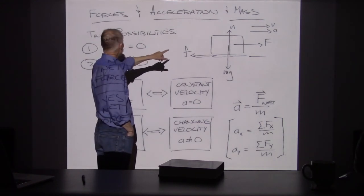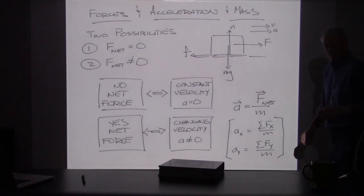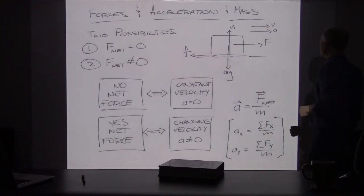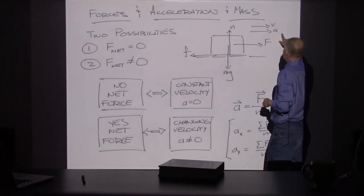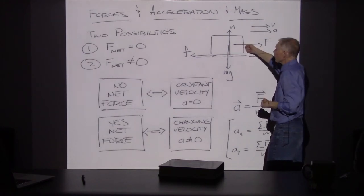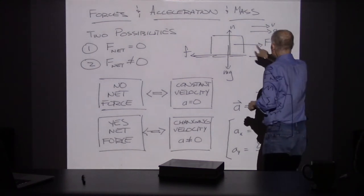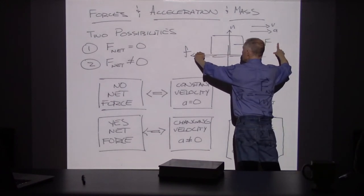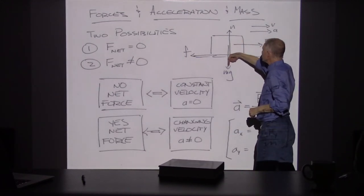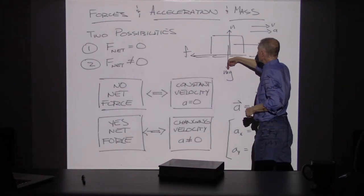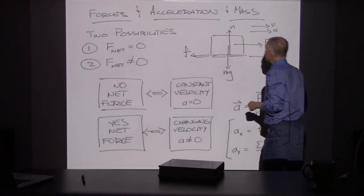Let's come back to one of these force diagrams. Here's an object — it could be the shopping cart or the box of olive oil. There's a tension T pulling it forward, a frictional force f opposing that along the surface, the gravitational force mg downward, and the normal contact force n upward. These are the same set of forces we've been discussing.